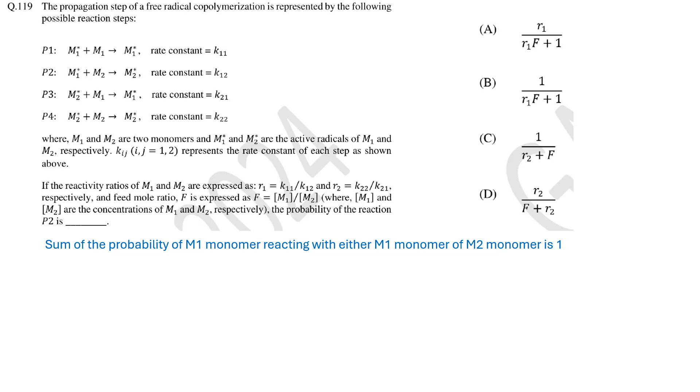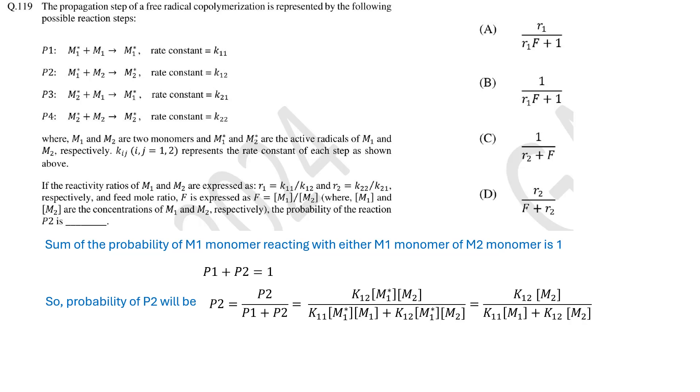So the probability that M1 radical reacts with M1 or M2 monomer is 1. So we can write the probability of reaction of P1 and P2 occurring is 1. And the probability of P2 can be represented by this equation. Now if we can write P1 and P2 as this, since rate will depend on rate constant and concentration of radical and unreacted monomer. And after simplification and replacing rate constant K with the reactivity ratio and monomer ratio by F we find the equation that matches with option B. So the answer is B.